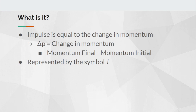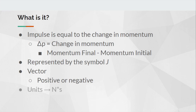Impulse is going to be a vector, meaning that it can be positive or negative, because we can have less momentum at the end than we have at the beginning, or more momentum at the end than we have at the beginning. The units of impulse are going to be Newton's times seconds.